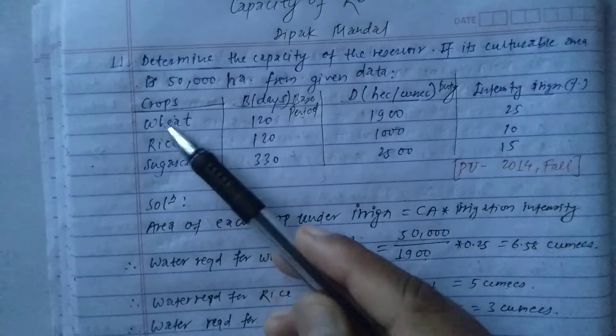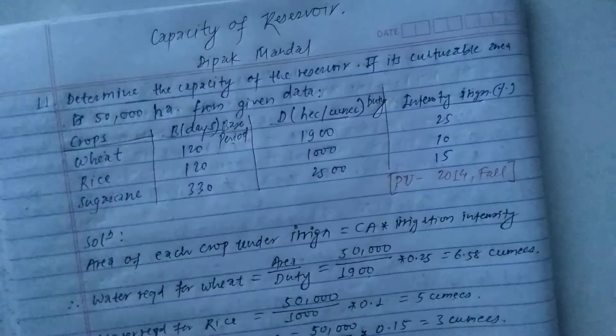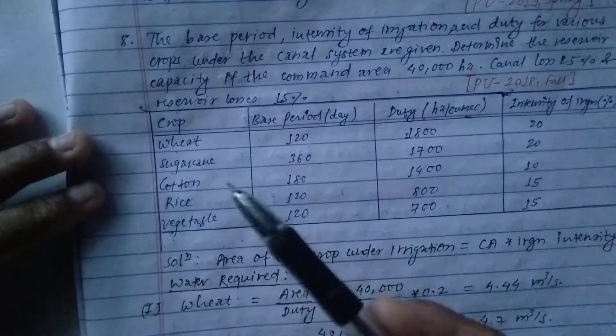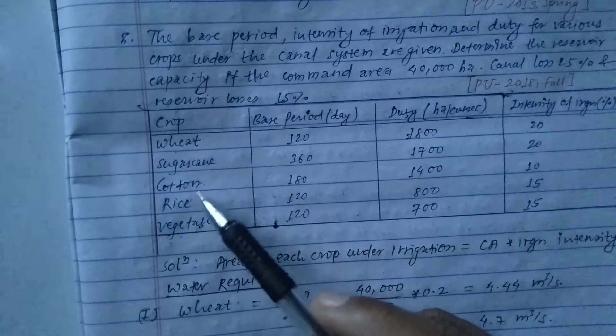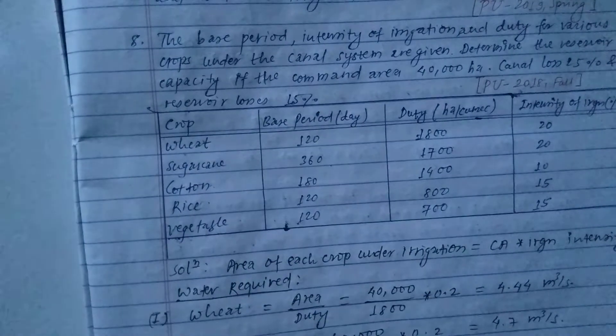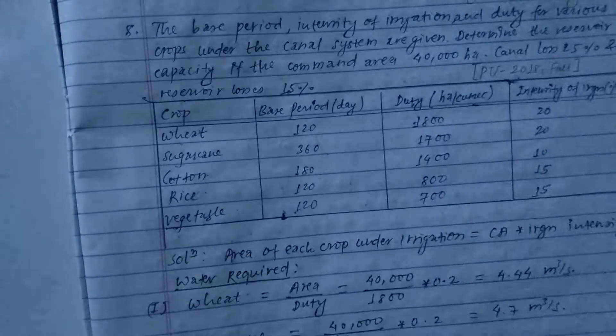In this question only three crops were given, so we calculated only for three. However, when a question includes more crops — such as wheat, sugar cane, cotton, rice, and vegetables — we must calculate the water required for all crops and then add all capacities together to get the total reservoir capacity. The method remains the same regardless of the number of crops.